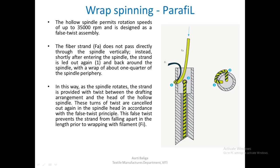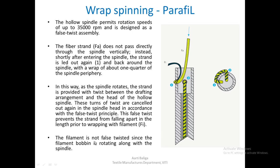These twists are cancelled out again at the spindle head in accordance with the false twist principle. As soon as the material comes out of the grip, the core — the staple fibres — will have no twist. The filament prevents the core from falling apart because it has already wrapped itself around the straight-lying core fibres. The filament is not false twisted because the bobbin is rotating on the hollow spindle itself, so the filament only wraps around the incoming core fibres.